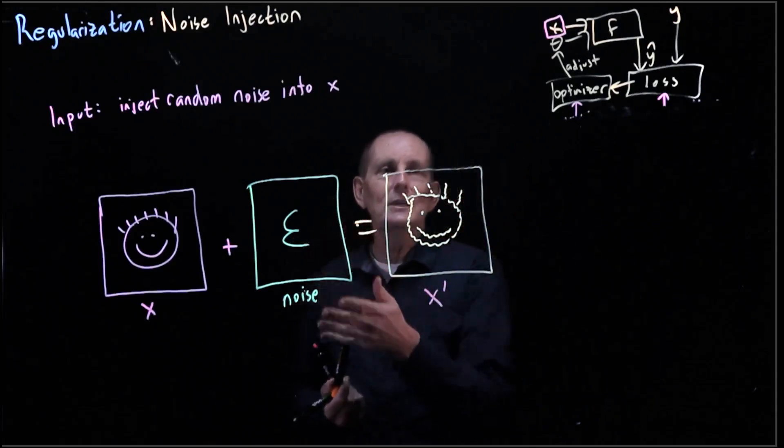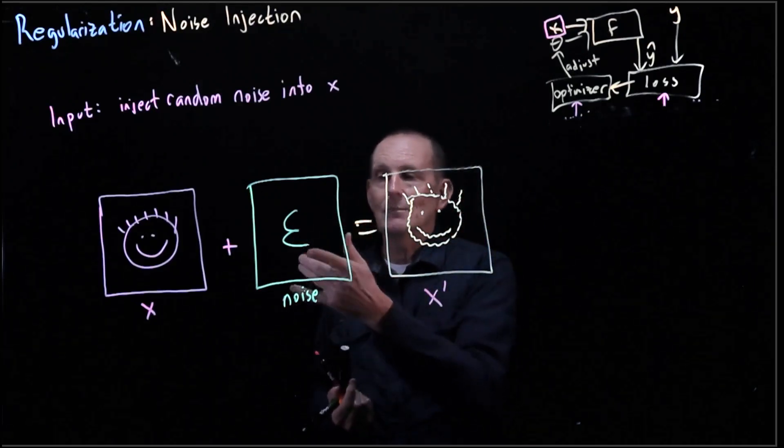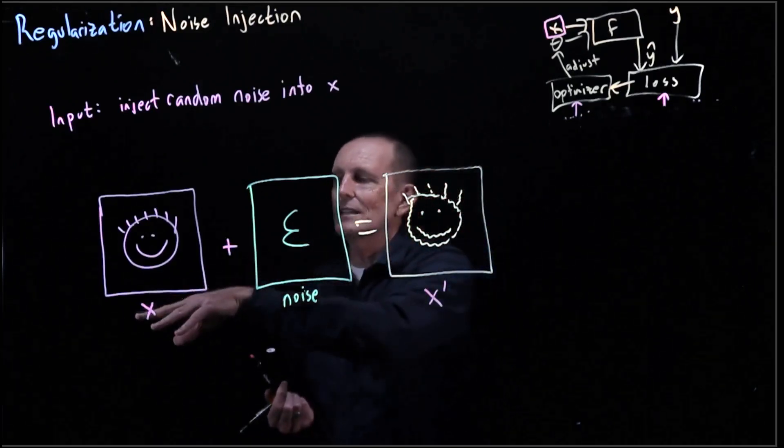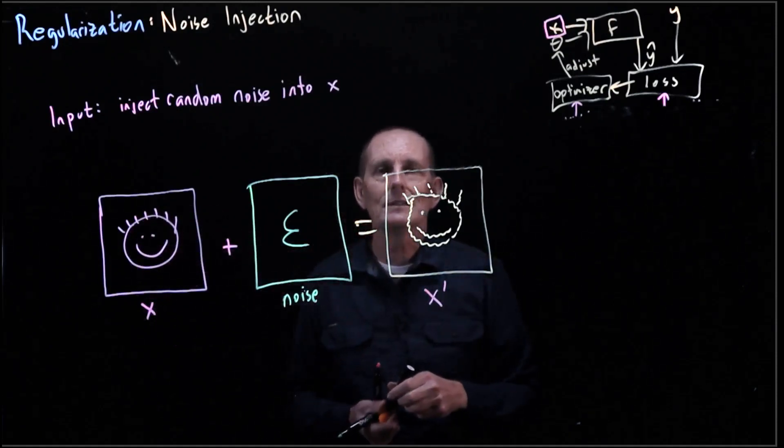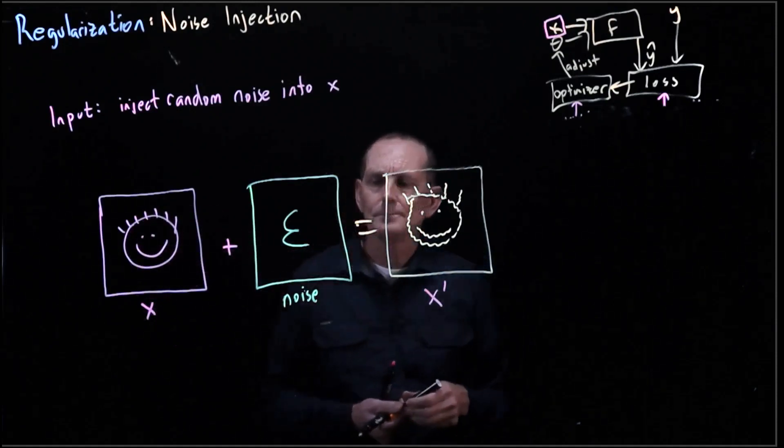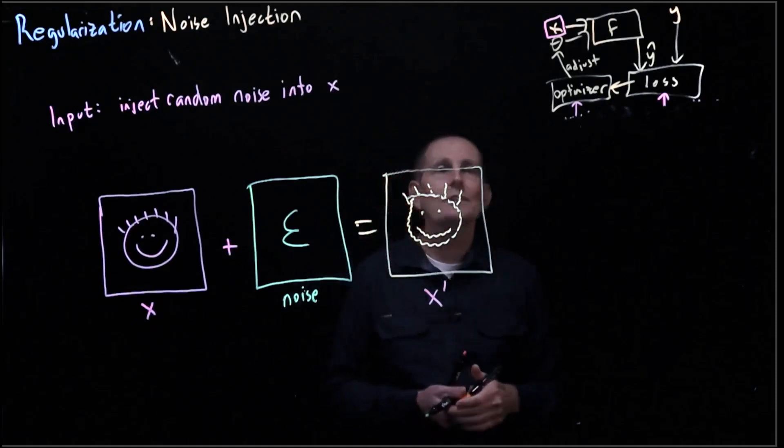Again, these can just be plus or minus one. These x values are between zero and 255, and so these can be plus or minus one, let's say.